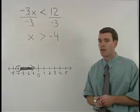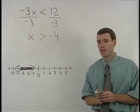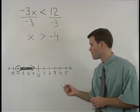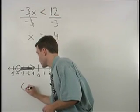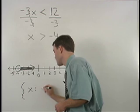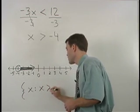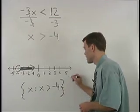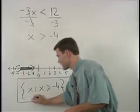Finally, we put our answer in what is called set notation, which is written in the following way: the set of all x's such that x is greater than negative 4. And this is our final answer.